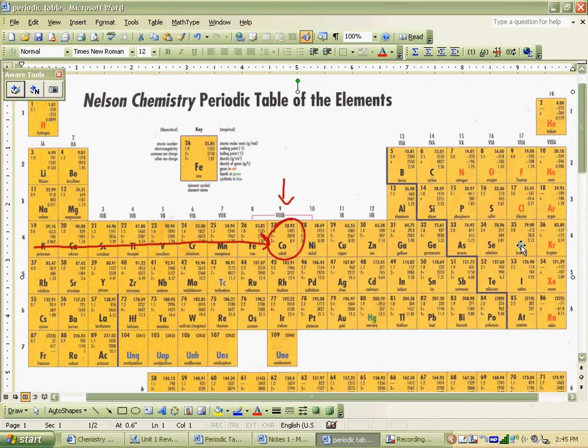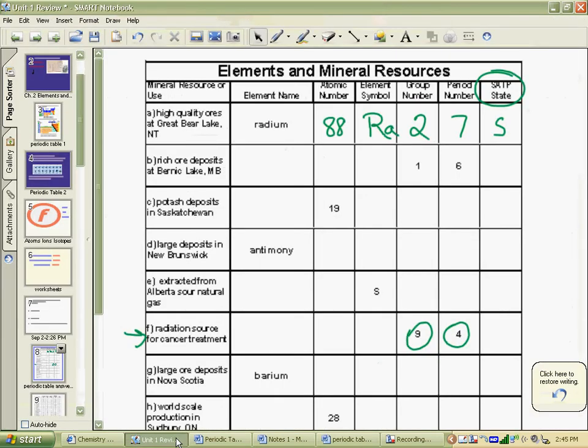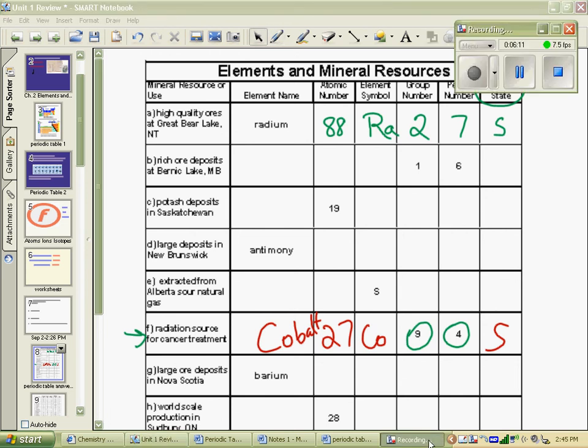So we pop back. This is cobalt. Cobalt is number 27. That's cobalt. We need the word there. Symbol here. Solid. And it's just that simple as you fill those in. We'll continue the rest of them in class, but hopefully that helps you answer some of those questions. Good luck with the rest of it.